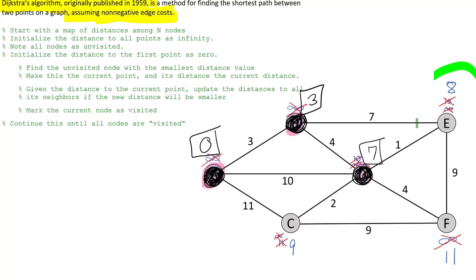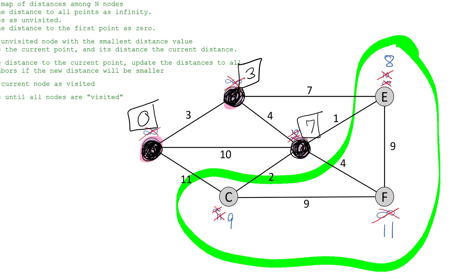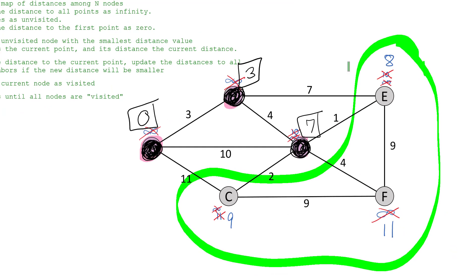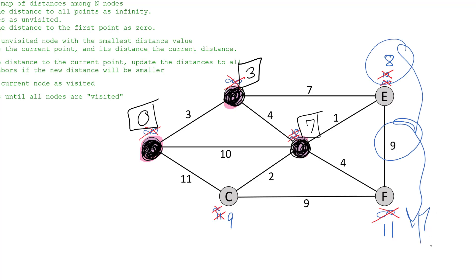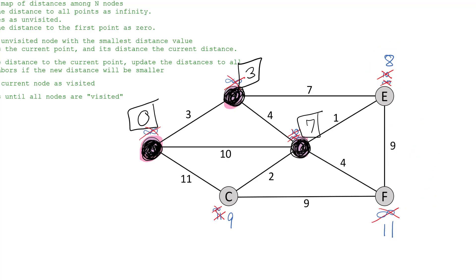Back to the loop — unvisited options are eight, nine, and eleven. We go with eight. From that node, the only place I can go: eight plus nine is seventeen. Seventeen is not less than eleven, so I can't improve anything — it's a kind of dead end. We mark it as visited and confirm it officially takes eight steps to reach that point.